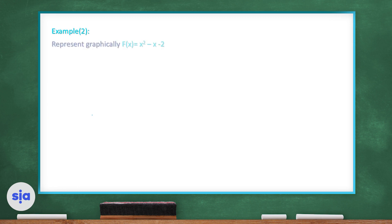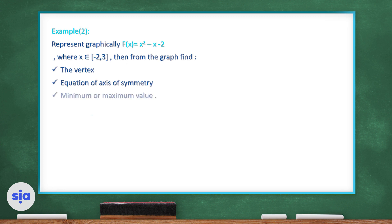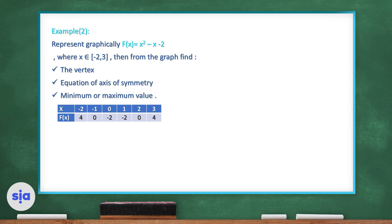Now example two. Another function is asked to be represented graphically for x values from -2 to 3. We'll find the vertex, axis of symmetry, and minimum or maximum value. Starting with the table of values, we replace x by -2, -1, 0, 1, 2, and 3 in f(x) = x² - x - 2. We get y = 4, 0, -2, and so on.